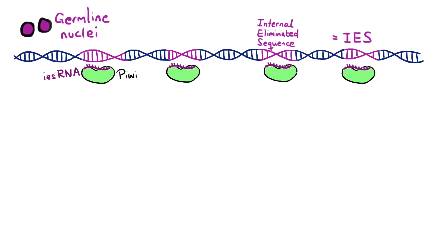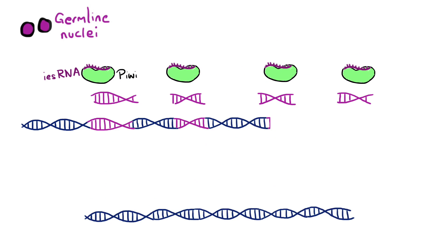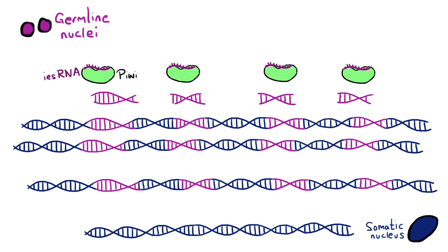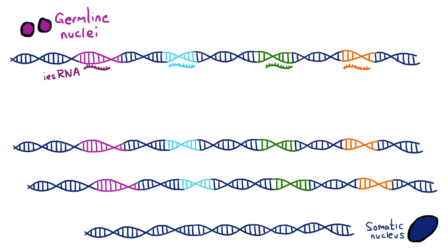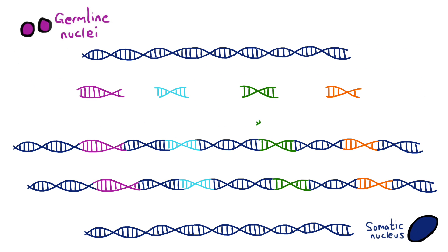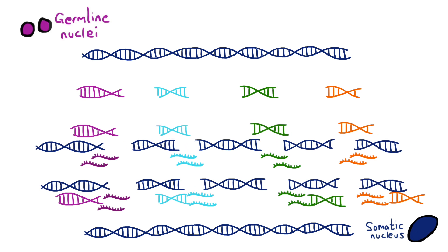Remember the paramecium development, where all these IESs have to be deleted at the same time that the genome is amplified? For clarity, let's make these IESs all different colours here, and let's remove the peewee proteins for simplicity. Now, IES RNAs are part of a feedback loop in which initial excision of IESs leads to small RNA production, and the small RNAs then target IESs in the amplifying genome for further excision.